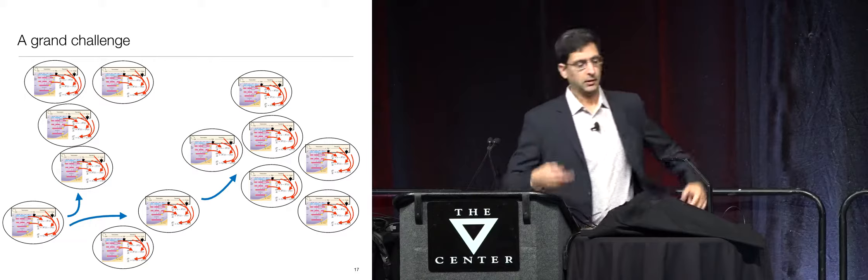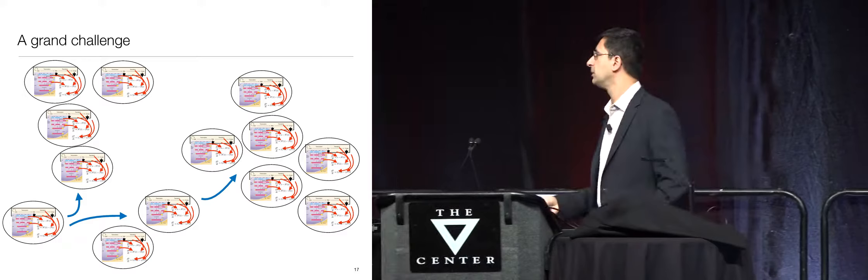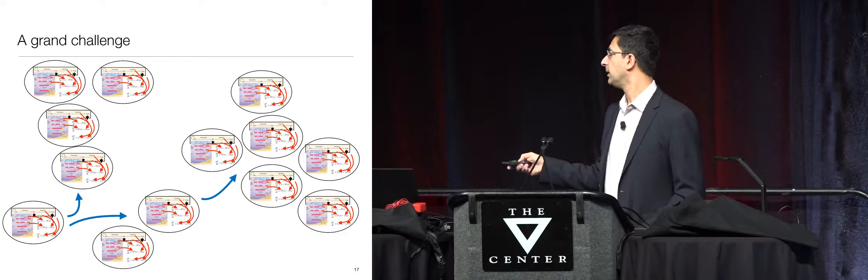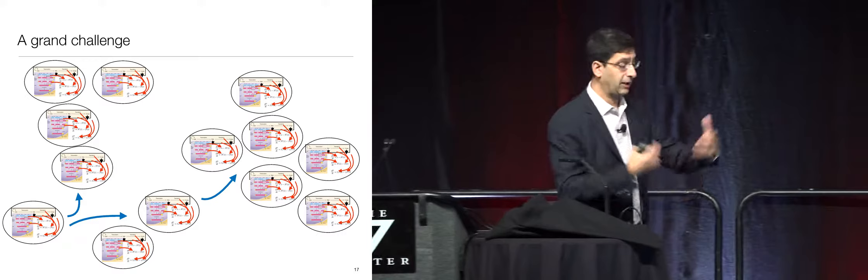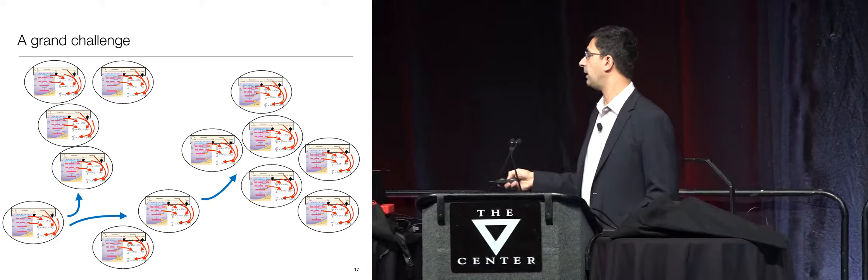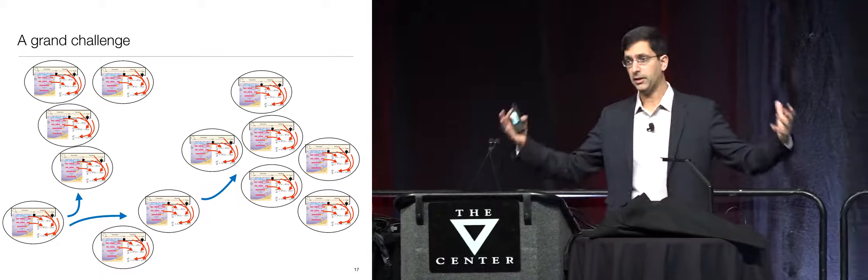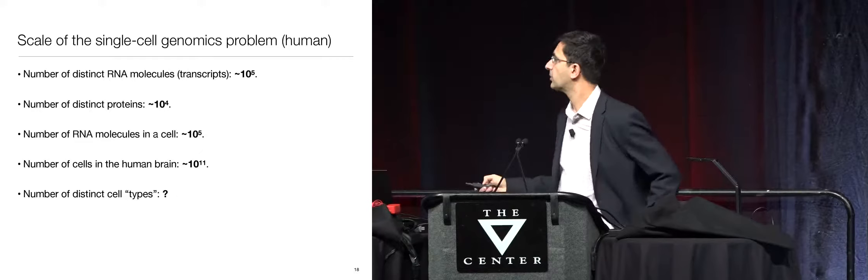I want to put in perspective where we are today. Our grand challenge is to basically model systems such as our brain. There are many cells in our brain, and for each of them there's a dynamical system operating inside it, which we're going to measure. We'd also like to know how these various cells are related to each other — cells have distinct types, and we'd basically like to study and understand this very massive dynamical system. How big is it? The number of distinct RNA molecules that might occur in any one of your cells is on the order of 10 to the 5th — probably around 200,000.